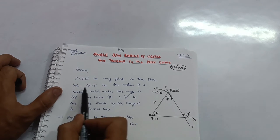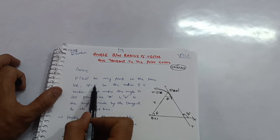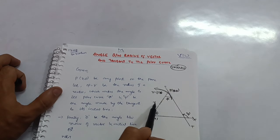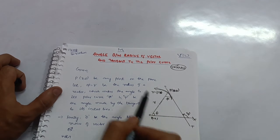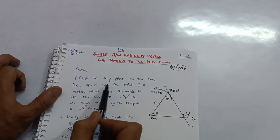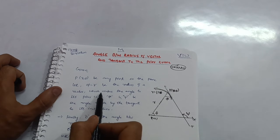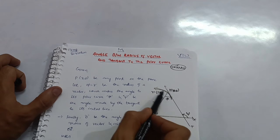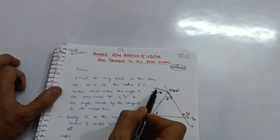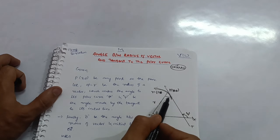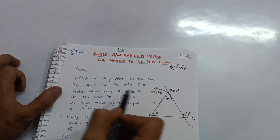Let OP = r, where O is the origin and P is the point. The line OP has length r and is called the radius vector. This radius vector makes an angle φ with the polar curve at the point P.